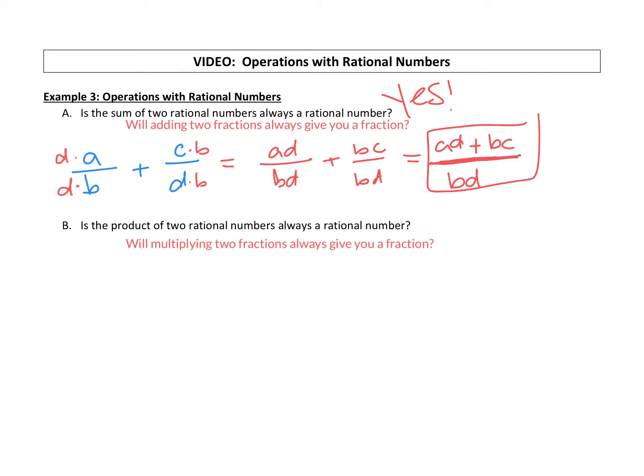Is the product. So product is multiplying two rational numbers. So I'm going to use the same rational numbers. My first rational number is going to be A over B. This time we're going to multiply it by the second rational number C over D. Just remember, these are representing numbers. You know, it could be 3 over 2 times 5 over 7, just multiplying rational numbers.